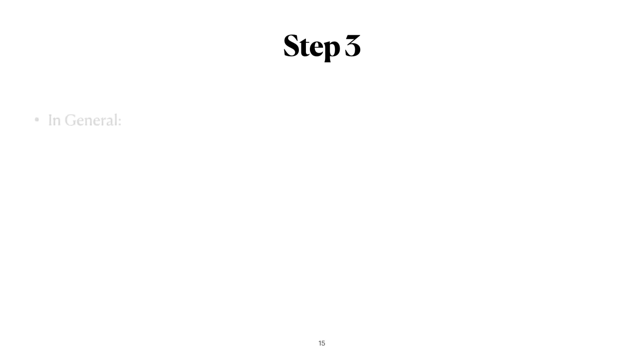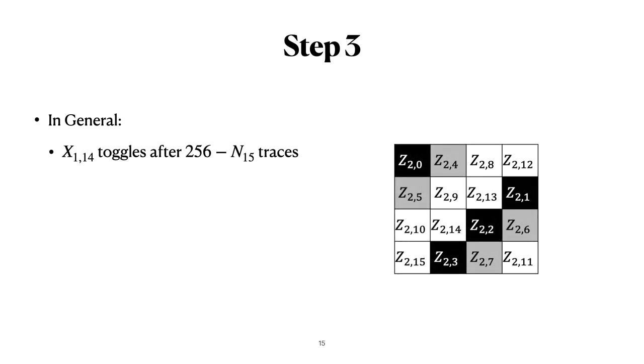So what happens in general is that the value of byte 14 in the first state changes after 256 minus n15 traces. So depending on this value of n15, we will have more traces with the first constant or the second. And our DPA attack would recover the constants that occur the most.